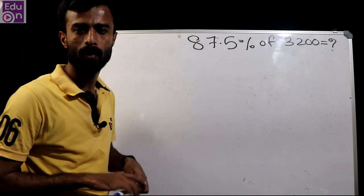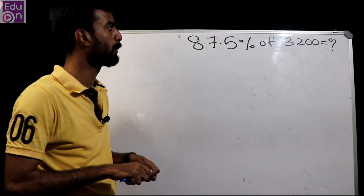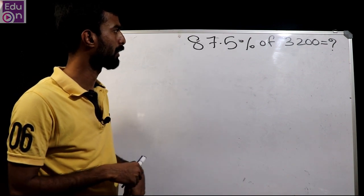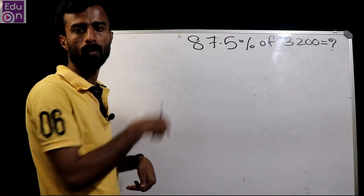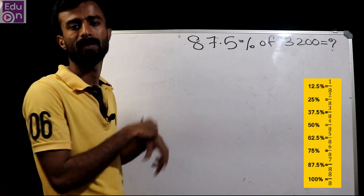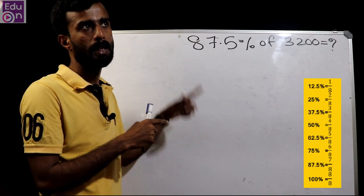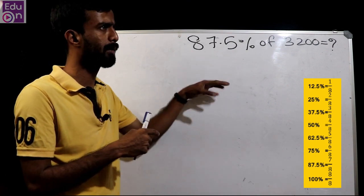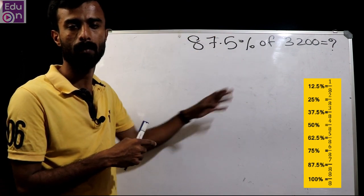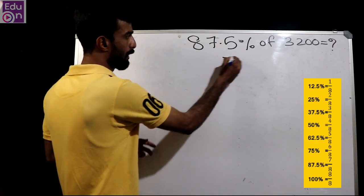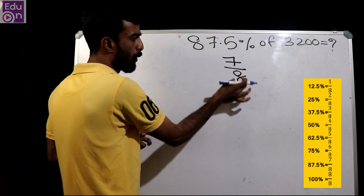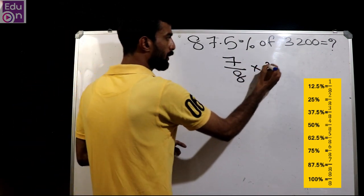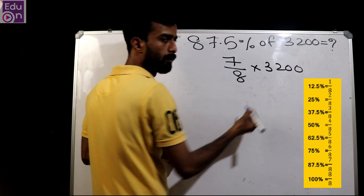The next question is: find 87.5% of 3,200. You are looking at a class example. 87.5% is expressed as 7 by 8. So 7 by 8 of 3,200 equals 2,800.